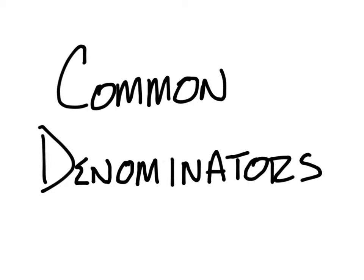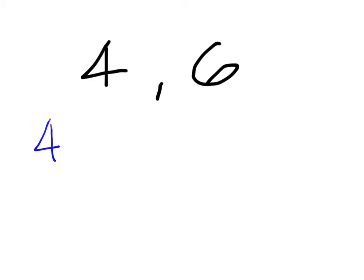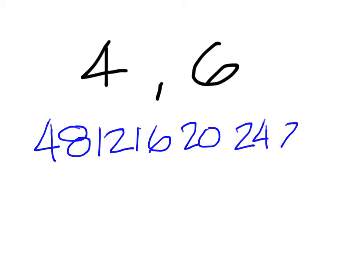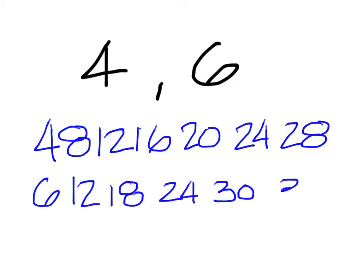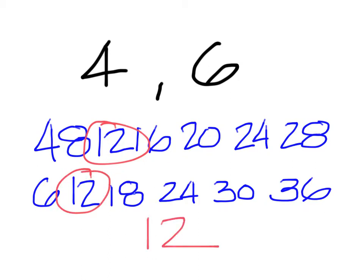Common denominators — you're about to compare two fractions, but it's useless to try this without practicing common denominators. We're going to look at two numbers and figure out what the lowest number is that both numbers go into. For 4 and 6: start with 4 and keep adding — 4, 8, 12, 16, 20, 24, 28 — then go to 6 — 6, 12, 18, 24, 30, 36. What's the lowest number that shows up in both lists? 12. So 12 is the common denominator.